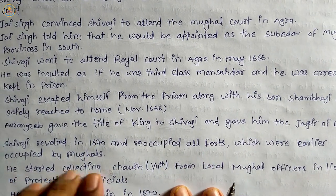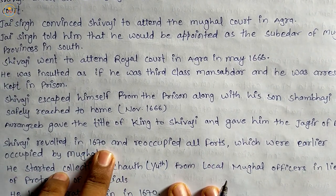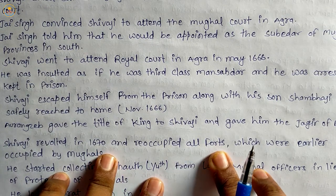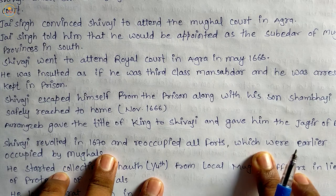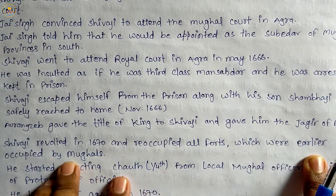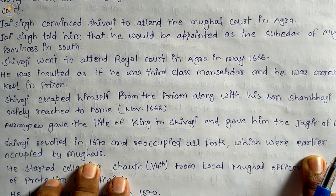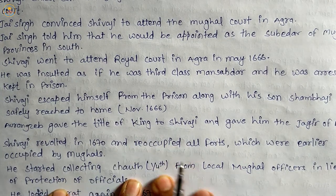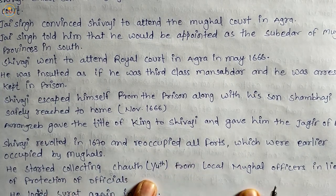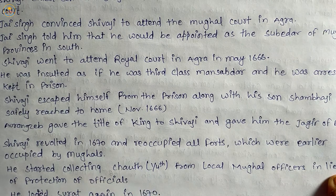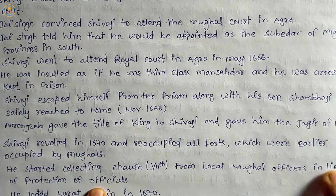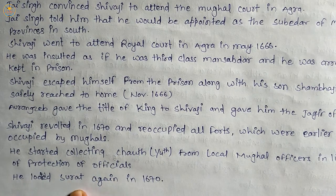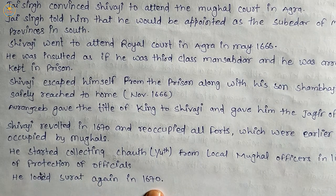Shivaji revolted in 1670 and reoccupied all the forts which had earlier been occupied by the Mughals. He started collecting chauth, which is one-fourth of the revenue from the local Mughal officers in lieu of protection. He looted Surat again in 1670 AD.